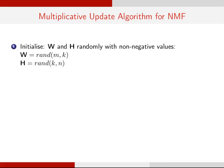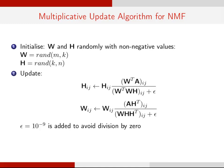A multiplicative update algorithm is used to determine W and H. W and H are initialized randomly with non-negative values. Then, W and H are updated using the equations shown. A small parameter epsilon is added to avoid division by zero.